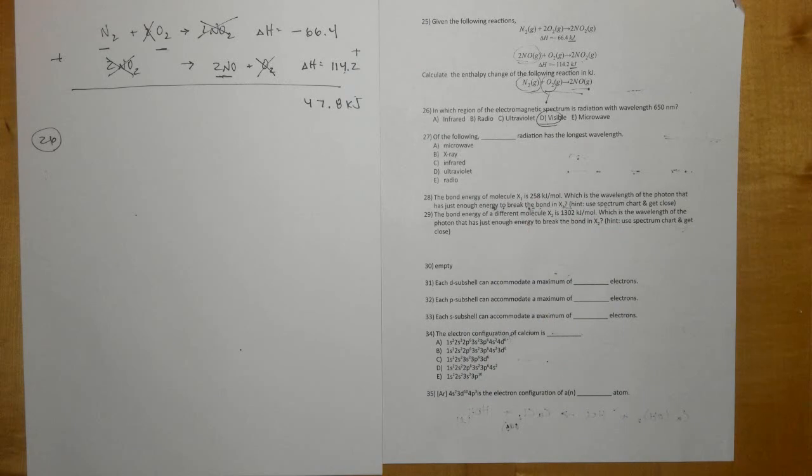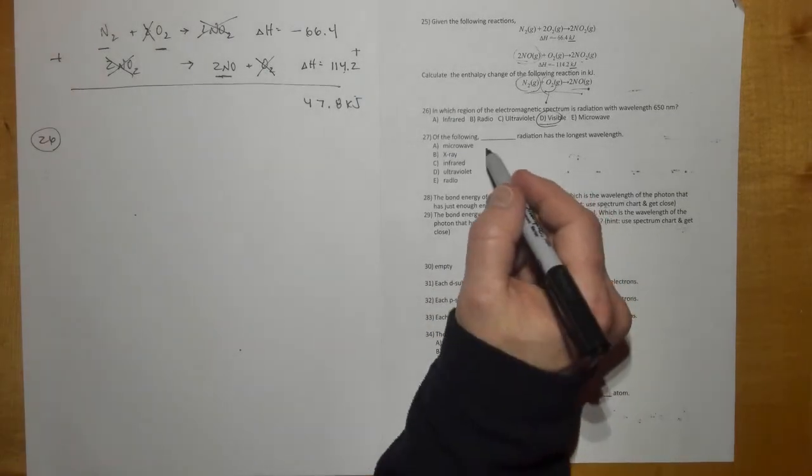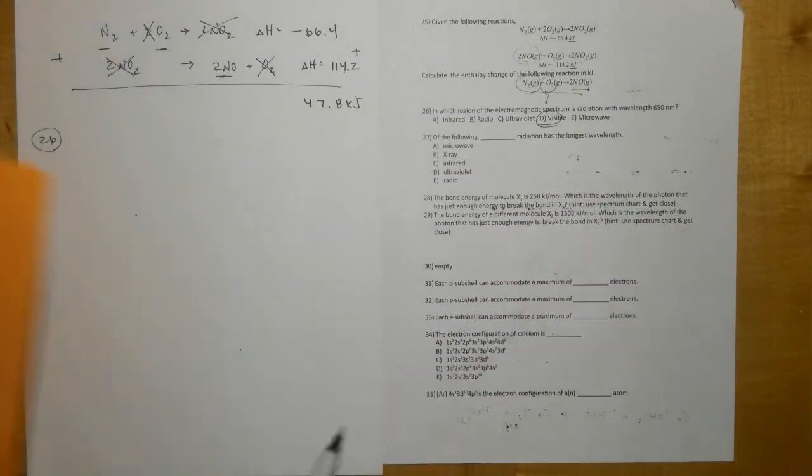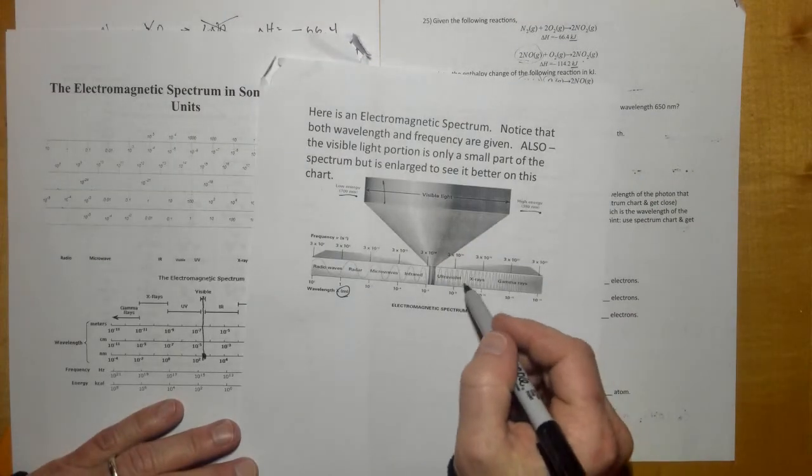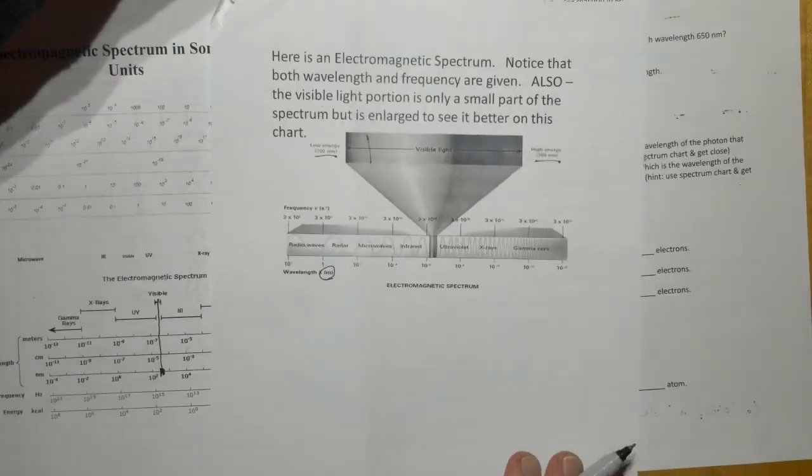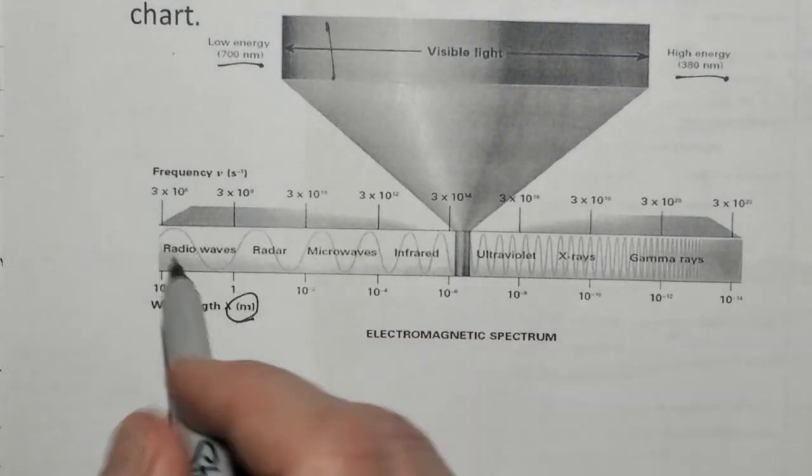And of course there'd be no expectation that you memorize where those are, you get these on the exam. Of the following, blank radiation has the longest wavelength. So you can see there's like a little diagram here of wavelengths. If I zoom in on it you can see that wavelength is really short right here and it gets longer and longer and longer. The longest ones right here are radio waves. So radio waves would be the answer to 27.